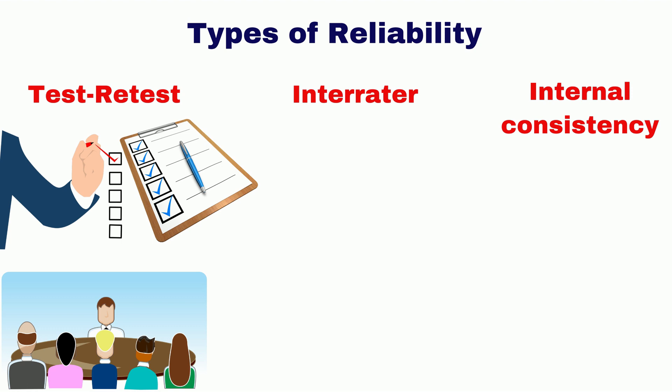The Cronbach alpha is used to measure the internal consistency of the item. If the alpha value is 0.70 or higher, the instrument is considered reliable.